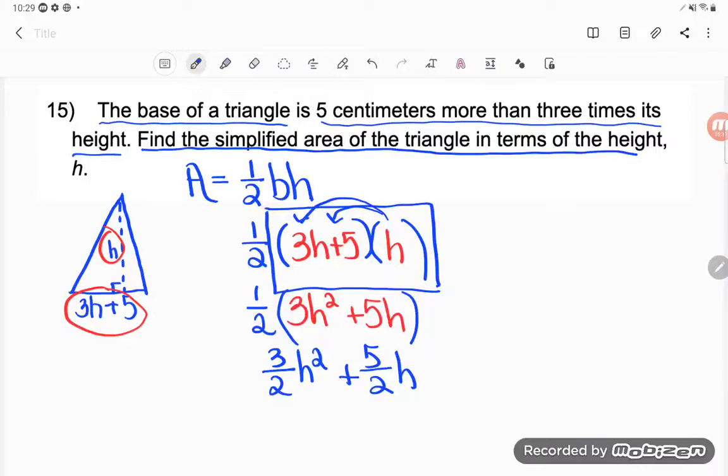Now let's see, what was I finding? Find the simplified area of the triangle. Area is always measured in square units. And the base of my triangle was 5 centimeters more than 3 times its height. So the unit here is going to be centimeters squared. Squared because I was finding area. Centimeters because that's what was in the problem.